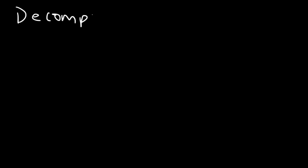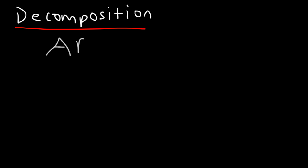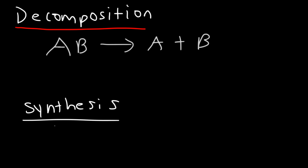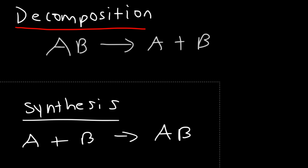The next type of reaction is decomposition. A decomposition reaction is simply the reverse of a synthesis or combination reaction. You're taking something larger or complex and breaking it down into smaller components. In a synthesis you combine A and B to form AB; in decomposition, AB breaks down into A plus B.